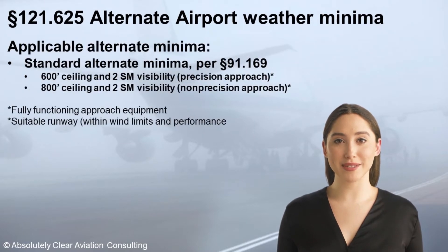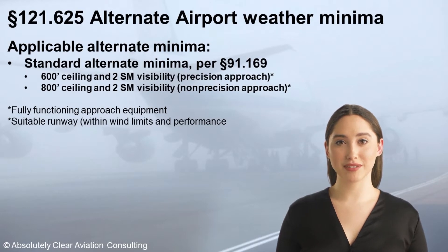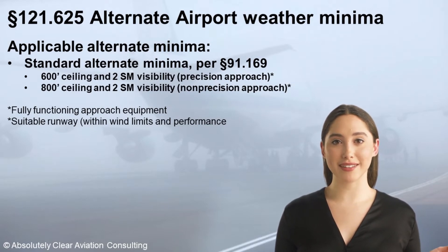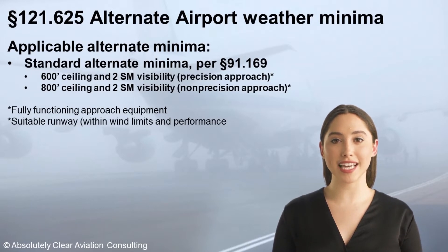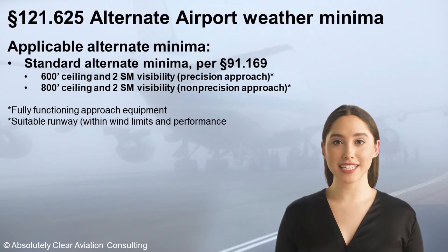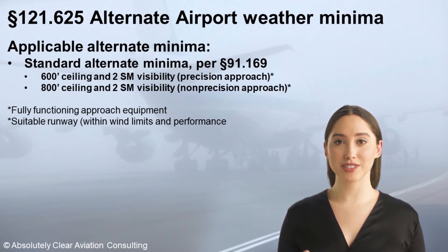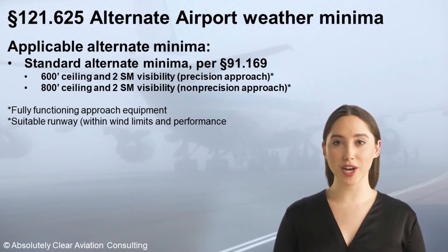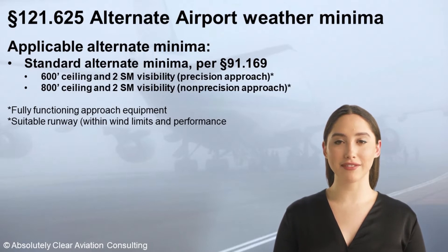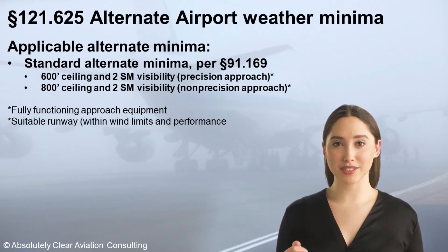Part 91 addresses alternate weather minimums in 91.169. The standard minimum visibility at the alternate ETA is two statute miles. The minimum ceiling is 600 feet if there is a functional precision instrument approach to a suitable runway, or 800 feet if an instrument approach to a suitable runway is only served by a non-precision instrument approach.